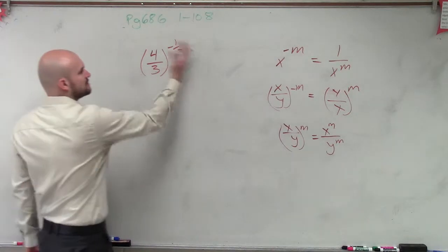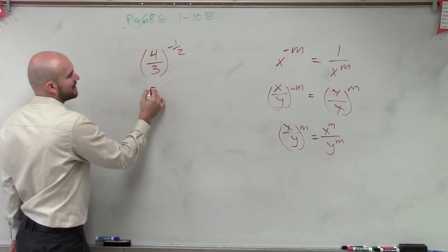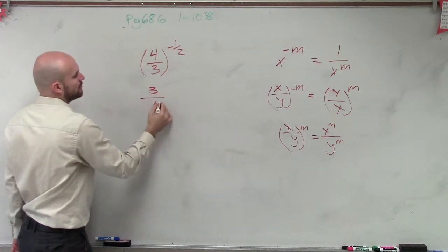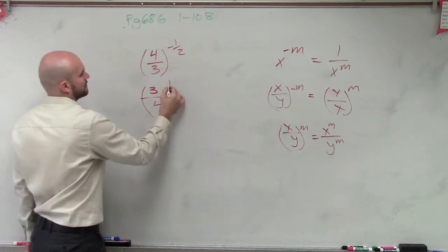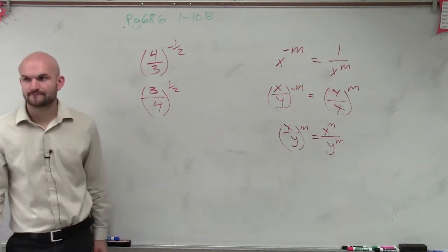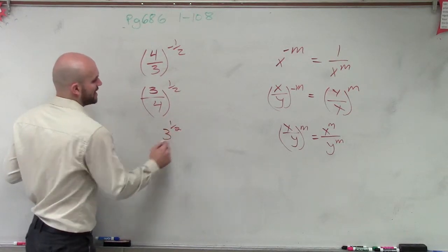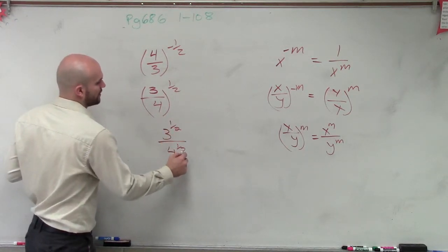So what we're going to first do on this problem, what I'd like to do is, let's rewrite this as a positive exponent. So therefore, I can rewrite this as 3 over 4 to the 1 half power. Does everybody agree with me on that? Okay. Then I can distribute that and rewrite this as 3 to the 1 half over 4 to the 1 half.